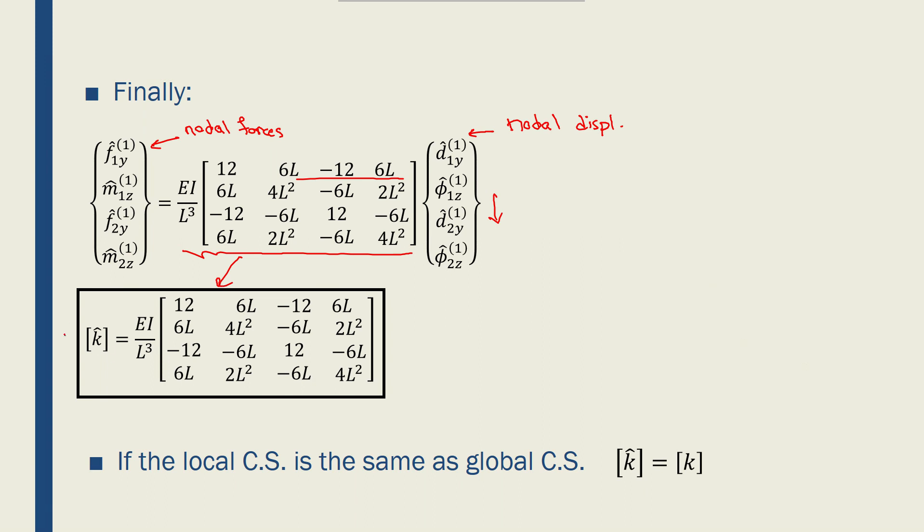However, we usually write the local and global coordinate system of a beam in the same direction. So let me change the color of my pen to draw two different coordinate systems.